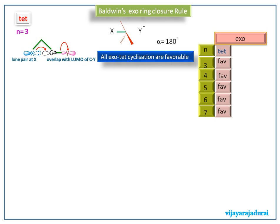Next we see the exo ring closure rule for trig hybridized molecule. In view of orbital interaction theory, the most preferable approach angle of nucleophile onto the unsaturated SP2 hybridized, that is C double bond Y star, is 109 degrees, that is perpendicular direction to the plane.